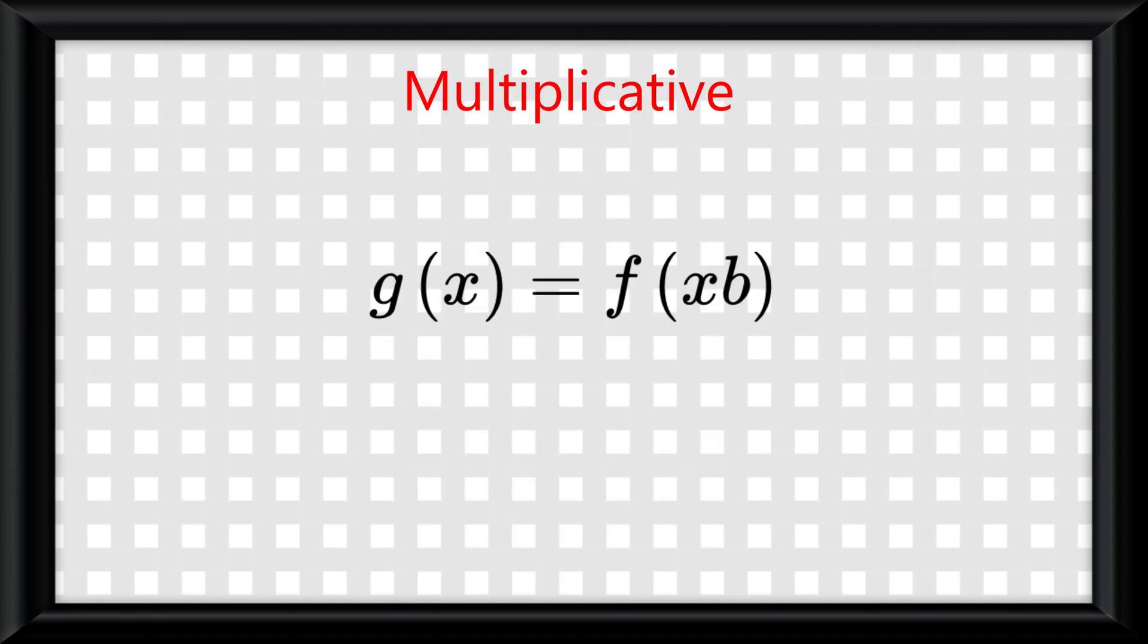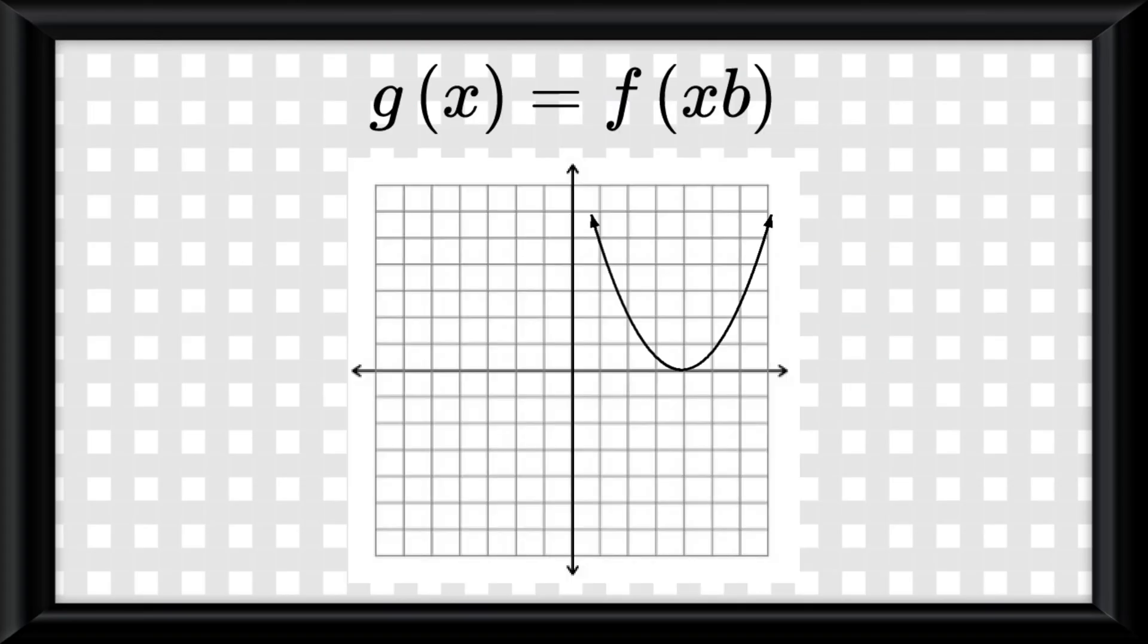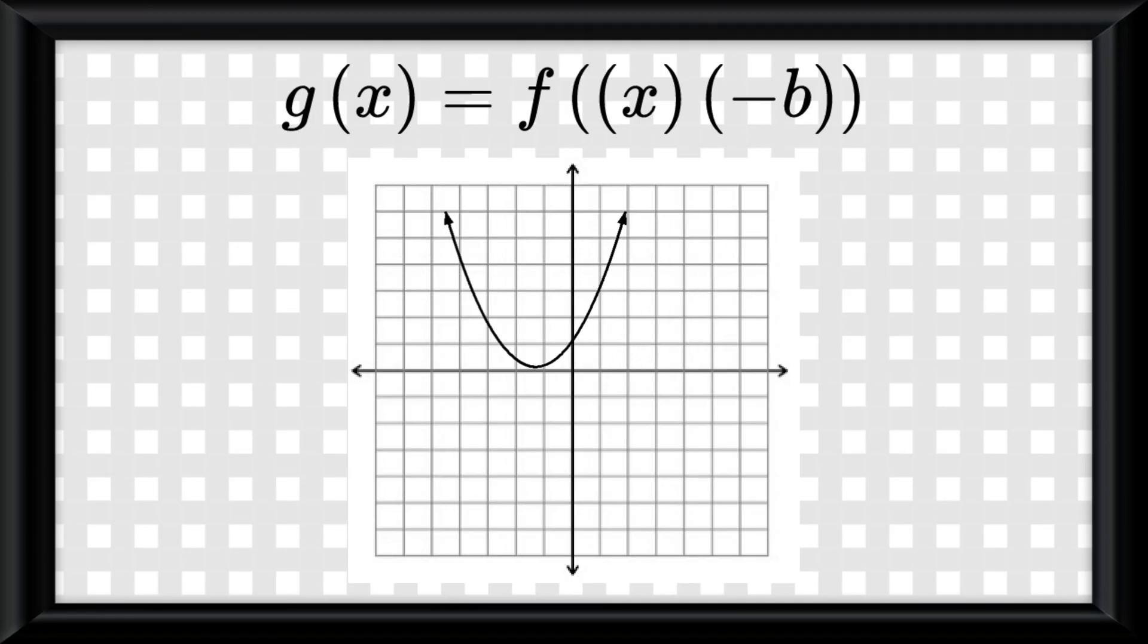G of x equals f of xb, when b doesn't equal 0, is a horizontal dilation of f by a factor of 1 over b. If b is negative, it will result in a reflection over the y-axis.